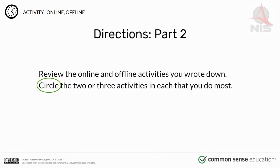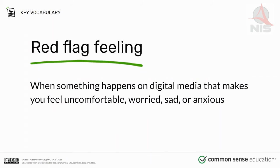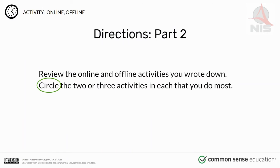In this next part of the exercise, we're going to review the online and offline activities you wrote down. Circle the two or three activities in each that you do most. By now, you should have circled the two or three activities in both the online and offline categories that you do most. Now let's continue on with the lesson.